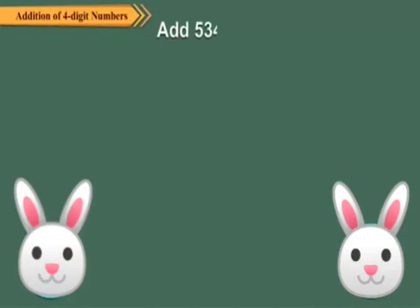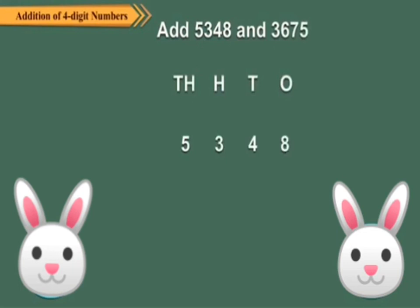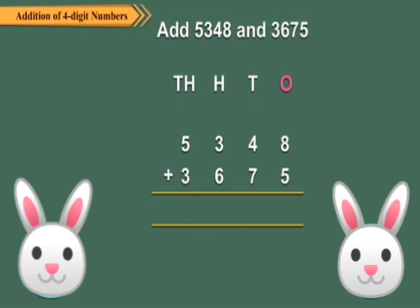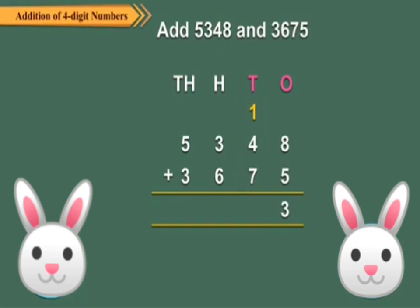Next example: Add 5348 and 3675. Arrange the numbers in column method according to their place value. Step 1: Add the ones. 8 ones plus 5 ones equals 13 ones, which is 1 ten and 3 ones. Carry over 1 ten to the tens column and write 3 in the ones column. Step 2: Add the tens. 4 tens plus 7 tens plus the 1 carried over equals 12 tens, which is 100 and 2 tens. Carry over 100 to the hundreds column and write 2 in the tens column.